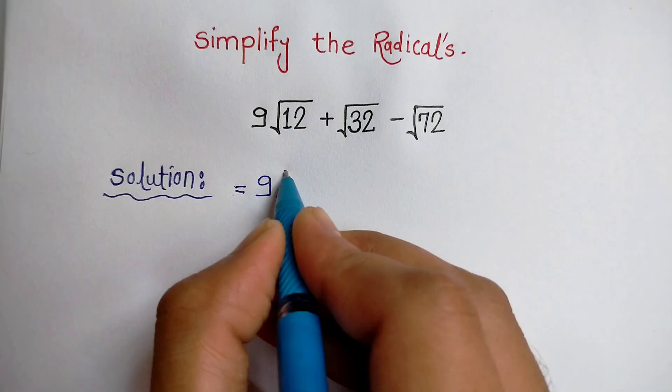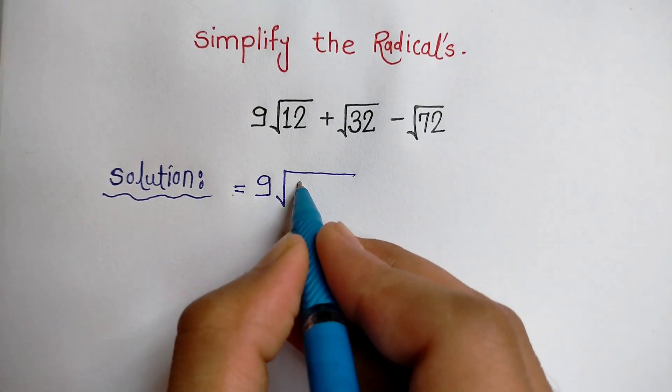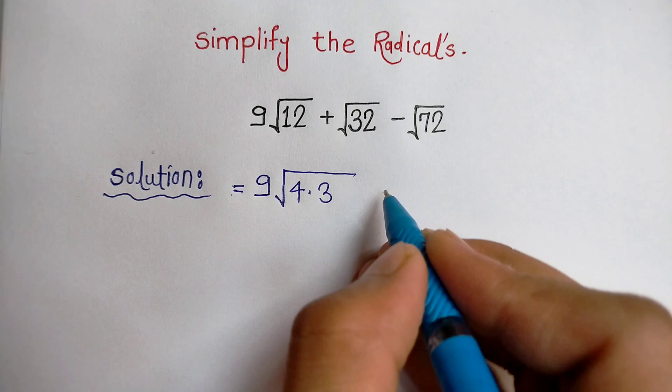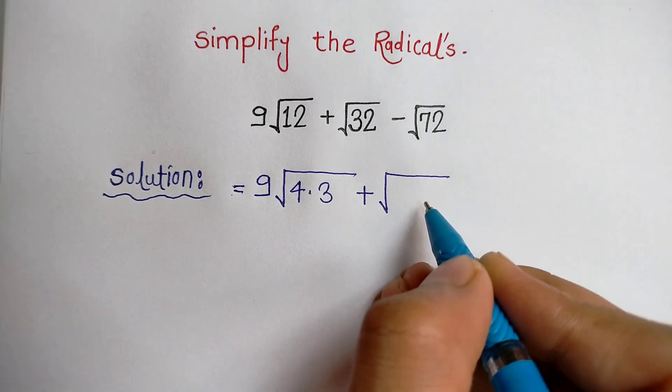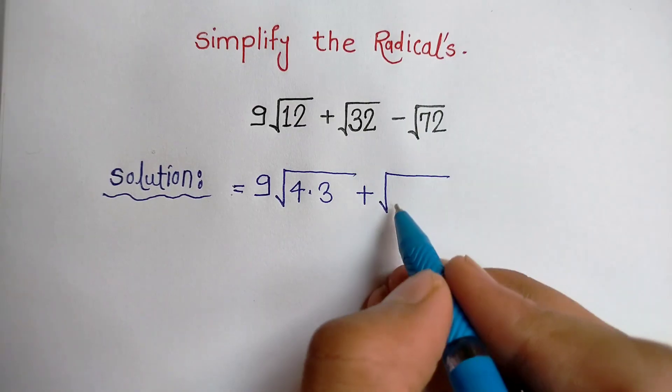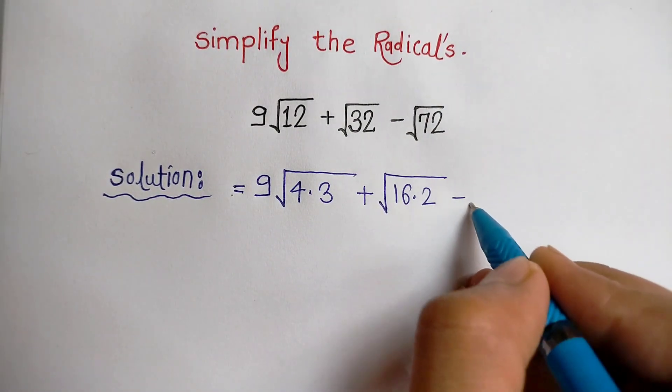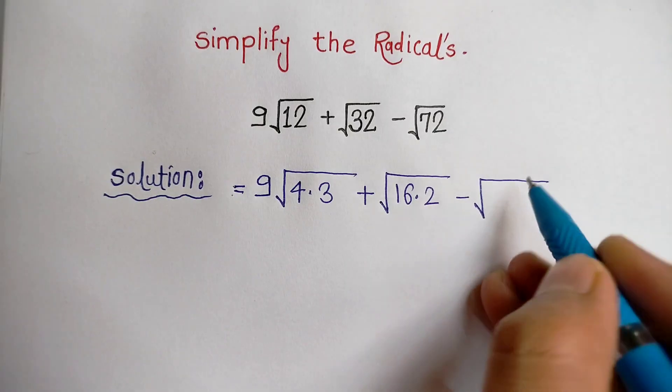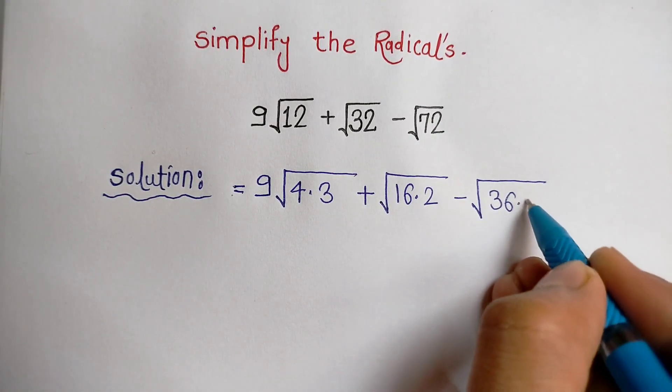9√12 can be written as 9√(4×3), plus √32 can be written as √(16×2), minus √72 can be written as √(36×2).